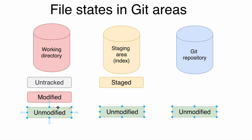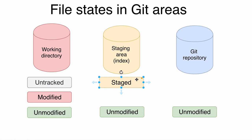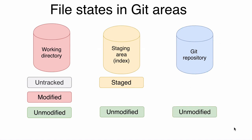When you take any unmodified file — already in the working directory, staging area, and git repository — and modify it, it becomes modified and remains modified in the working directory. To move it to the staging area you use the git add command to stage it, after which the file becomes staged and the changed version is now in the staging area. But until you commit, the git repository still contains only the old version of the file. When you commit, the modified file transitions from staged to unmodified, and all three areas — working directory, staging area, and git repository — become fully consistent.